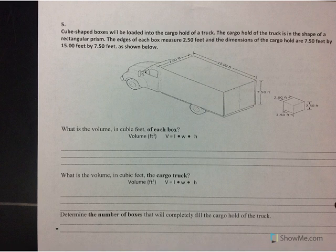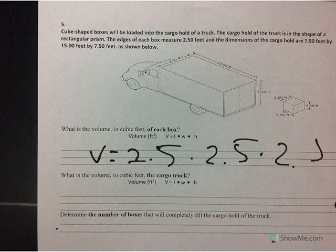All I'm going to do is multiply V equals 2.5 times 2.5 times 2.5. When I multiply all of that together, I get a volume of each box as 15.625 feet cubed.